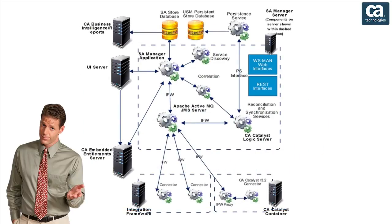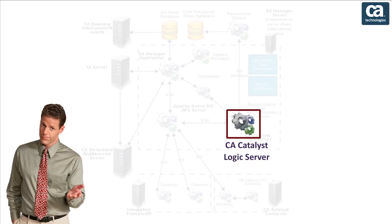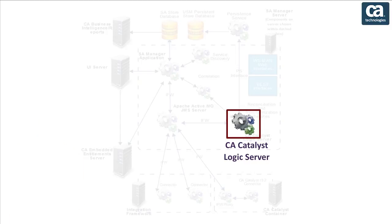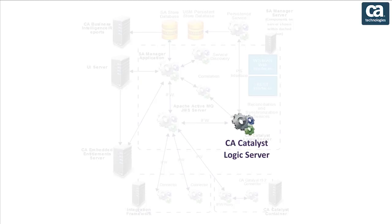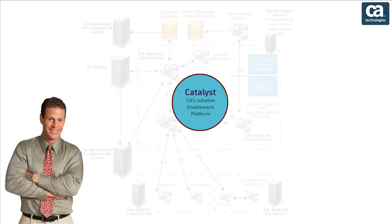Let us move on to the next component: CA Catalyst infrastructure. CASOI fully adopts the CA Catalyst integration platform as its infrastructure. CA Catalyst is the CA Technologies common integration platform that provides the groundwork for unifying data from all CA Technologies products and many third-party products.